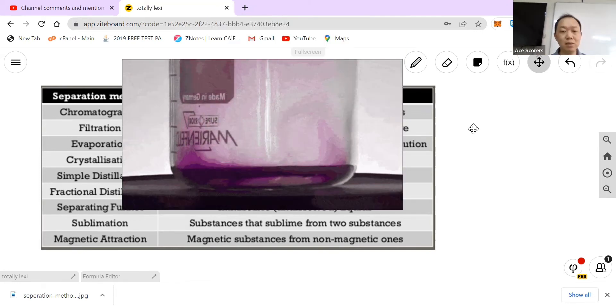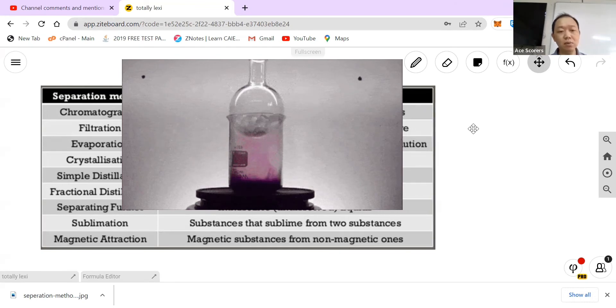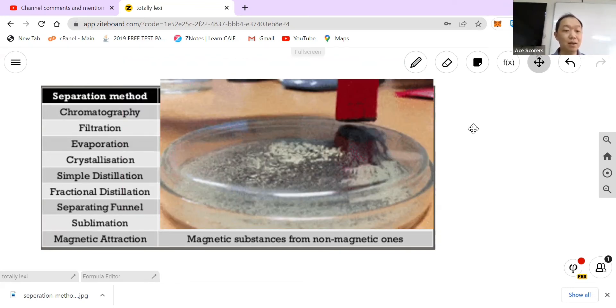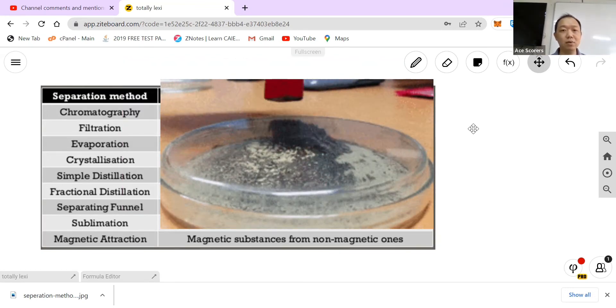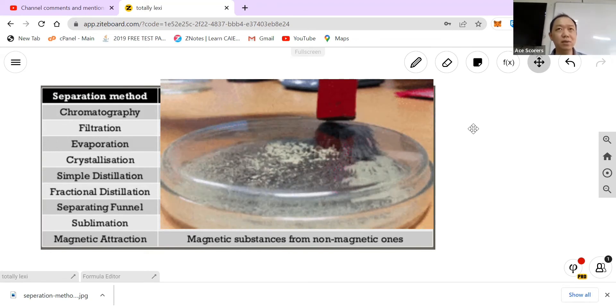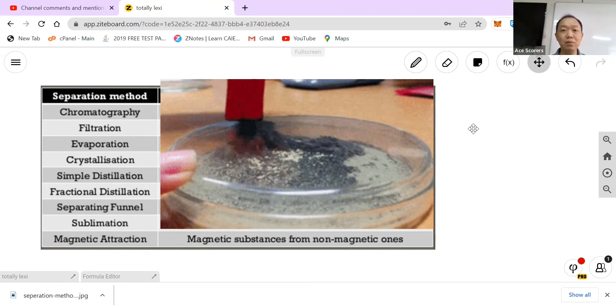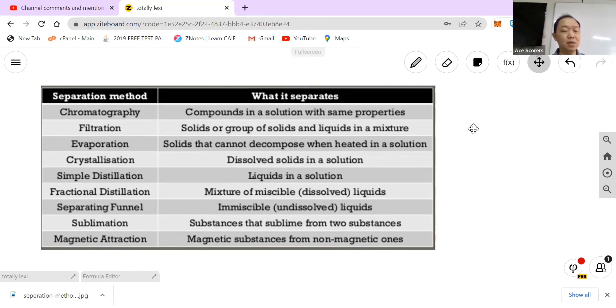Example: solid iodine or ammonium salts. And lastly, magnetic attraction: so magnetic substances from non-magnetic ones like iron and sand. You want to extract the iron stuff like that. So these are the different separation methods. So I think most important is that for each of the methods there are some important things that you will know.